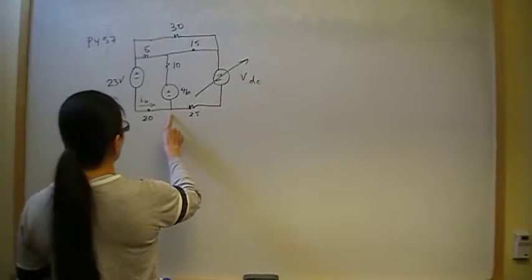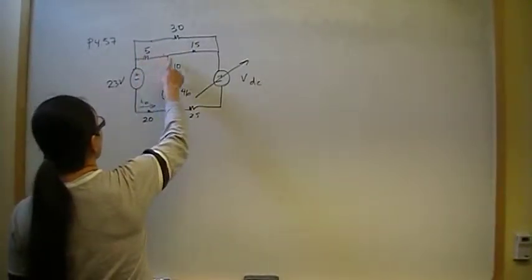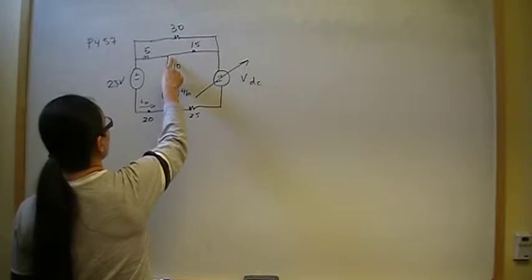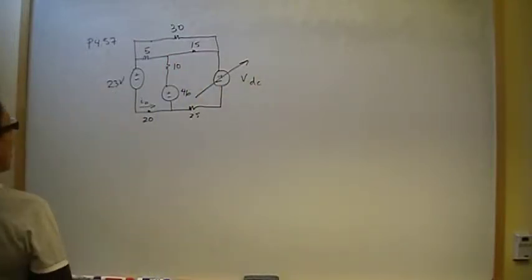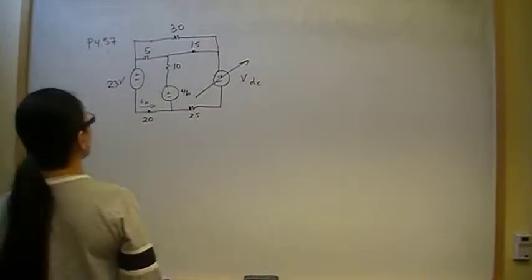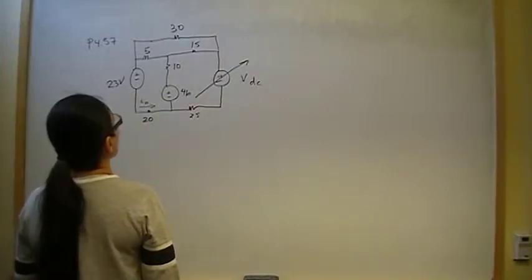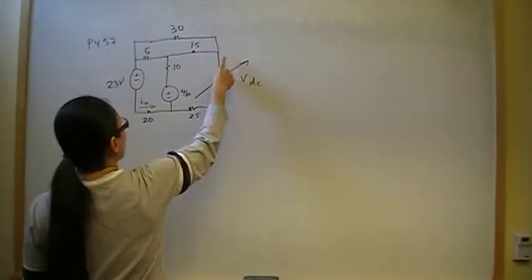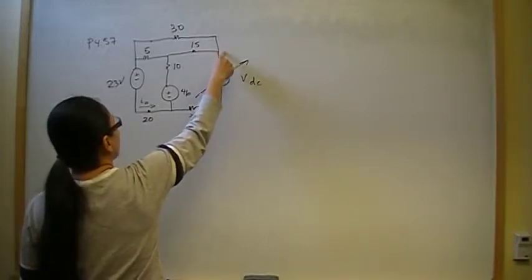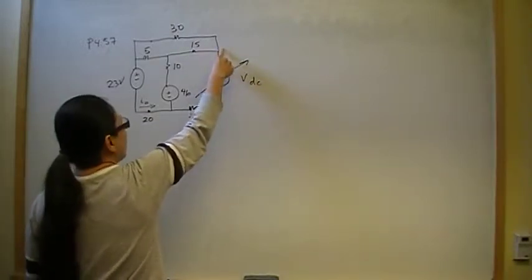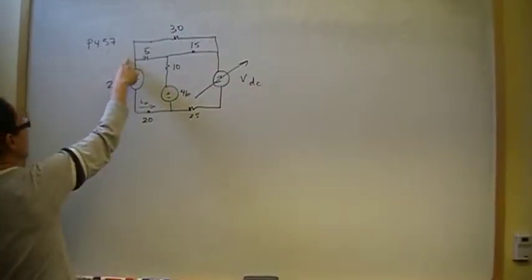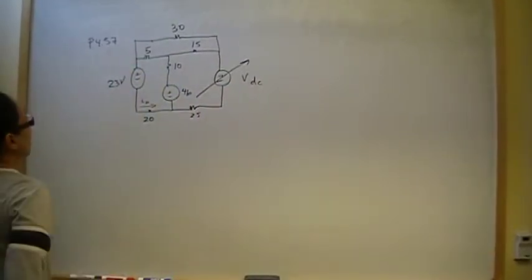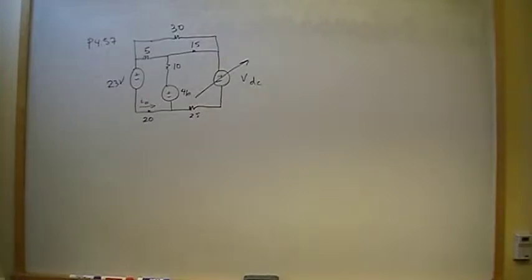I would choose this one for the ground, giving one unknown voltage at each of the other three nodes. But the node method has something tricky to deal with here: this node is going to be some Vx plus Vdc, and this node is going to be some Vy plus 23. So the node voltage approach is going to be a little more complicated.